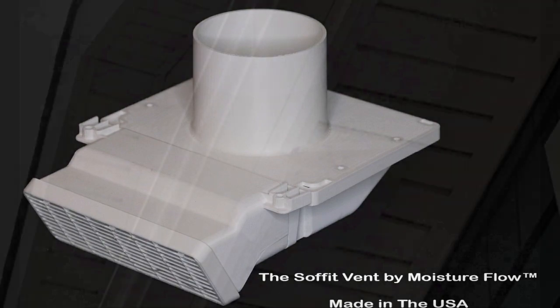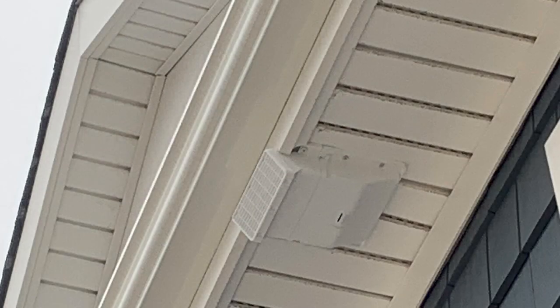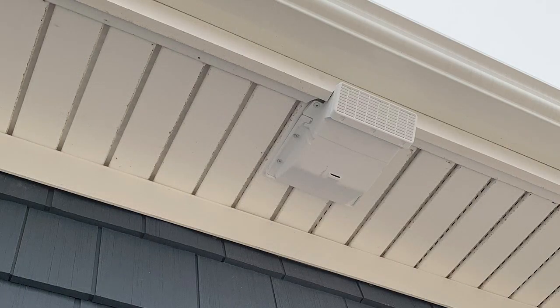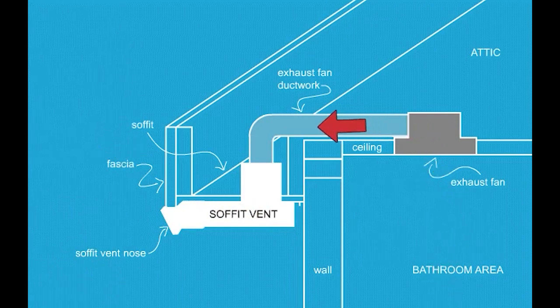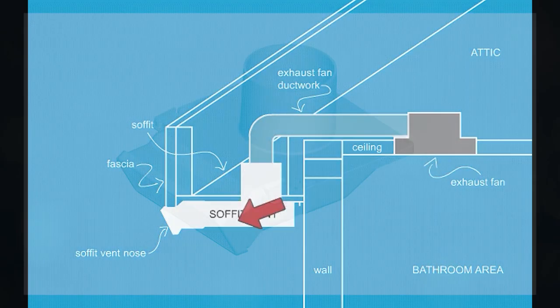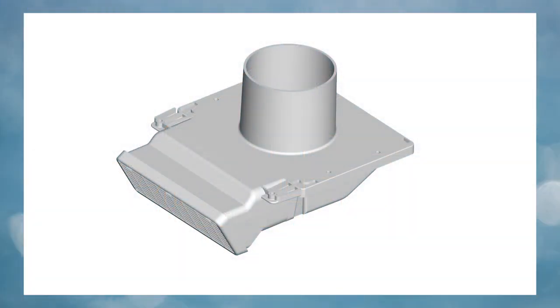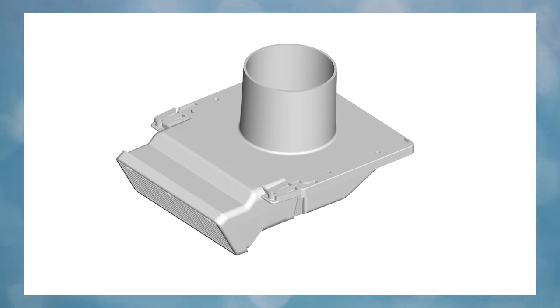Introducing the Soffit Vent by Moisture Flow — the only patented and proven solution to properly vent the termination of a bathroom exhaust fan through the soffit. The soffit vent's unique patented design allows the hot, moist air from the bathroom to be exhausted through the soffit without worry or fear that it will mix with the cool air intake for the attic. This eliminates the danger of moisture and mold forming in the attic from improper, commonly used exhaust vents.